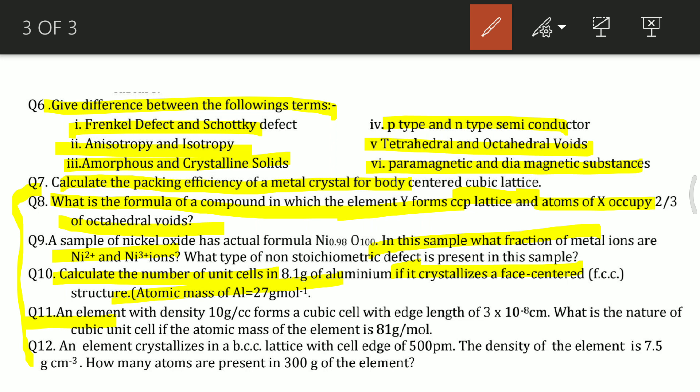Question 11: an element with density 10 g/cc forms a cubic cell with edge length 3×10⁻⁸ cm. What is the nature of the cubic unit cell if the atomic mass of the element is 81 g/mol?